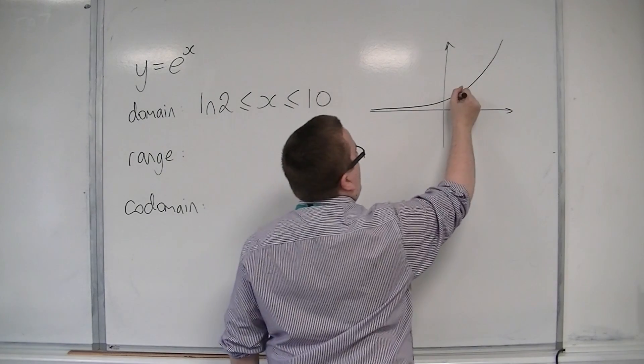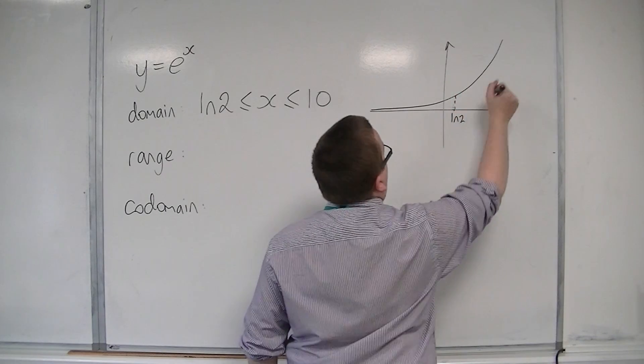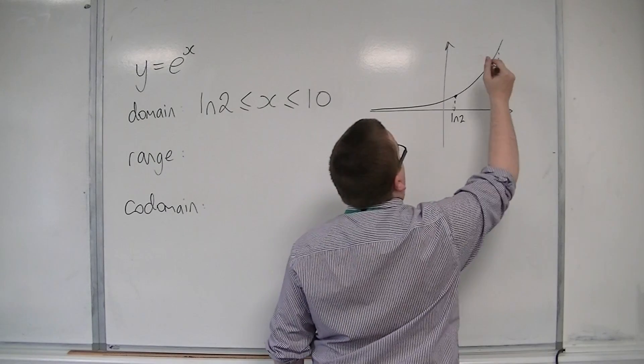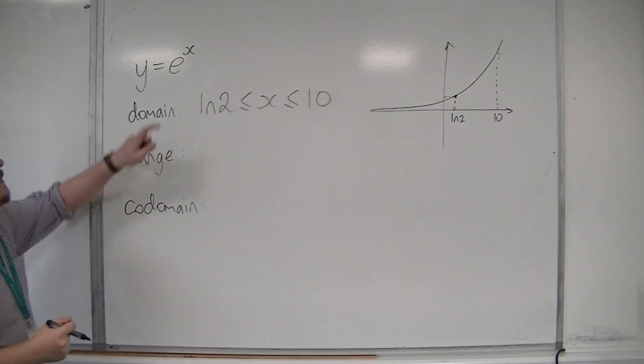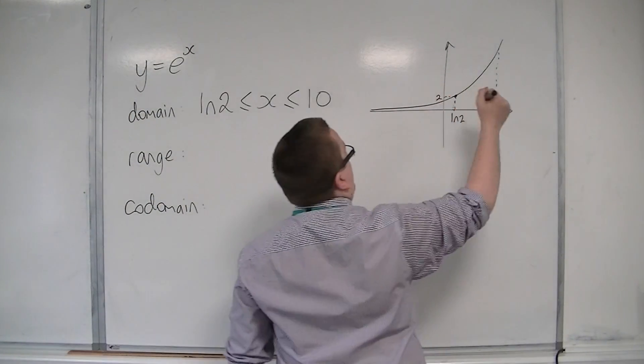So if I'm looking at between log 2 all the way up to 10 on the x axis, then log of 2, e to the log 2 would just be 2, so that would be 2 on the y axis.